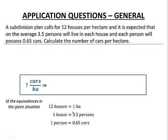We can take each of these equivalences and make them into unit ratios, but we might have trouble figuring out where to start. This is why the reverse engineering technique — starting at the end — is handy, because we want to end up with cars per hectare.